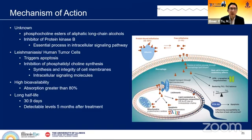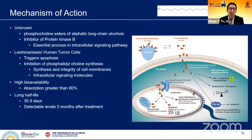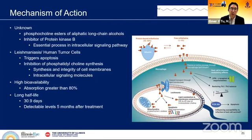As far as the mechanism of action, it appears to be an inhibitor of protein kinase B, an essential process in the intracellular signaling pathway. In leishmaniasis and human tumor cells, it triggers apoptosis, and it's thought to interfere with the synthesis and integrity of cell membranes and intracellular signaling molecules. It likely has a multifactorial effect, destabilizing mitochondrial membranes and the cell wall while also causing apoptosis. Another advantage is its high oral bioavailability — greater than 80% — and a very long half-life of around 31 days, with drug levels detectable up to five months after therapy.